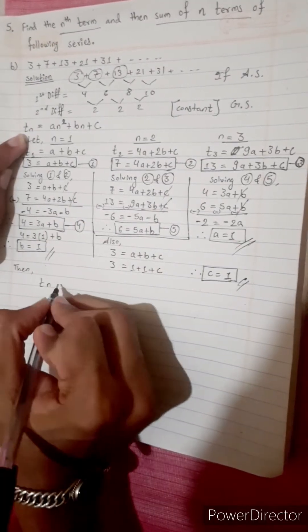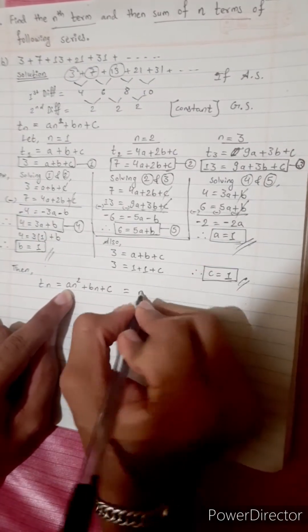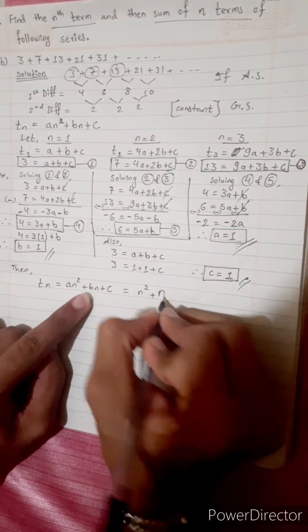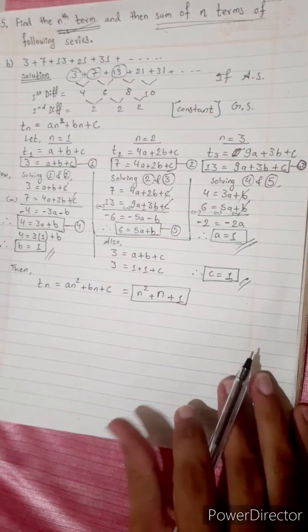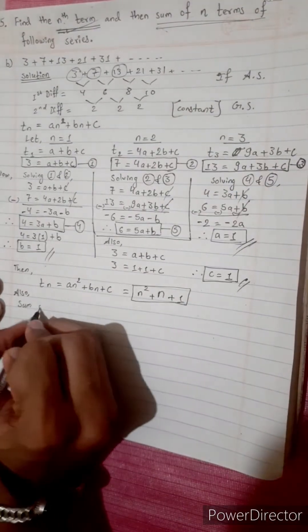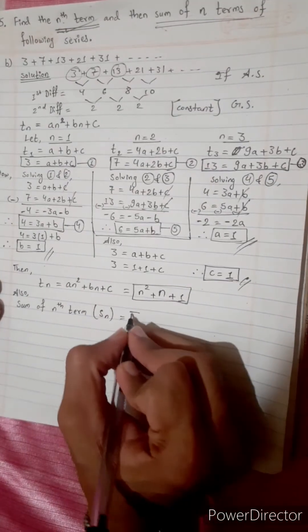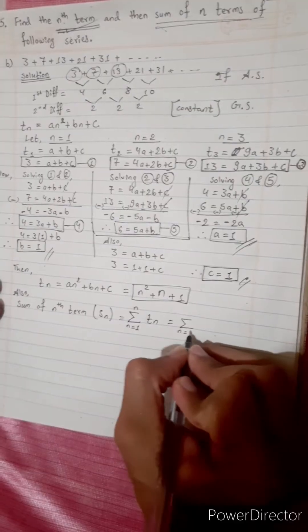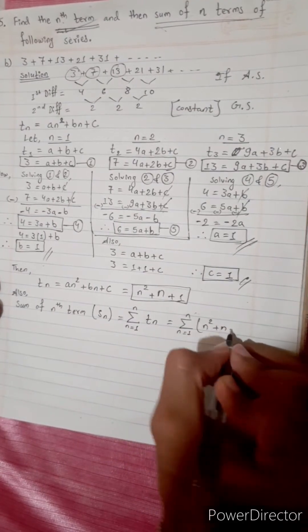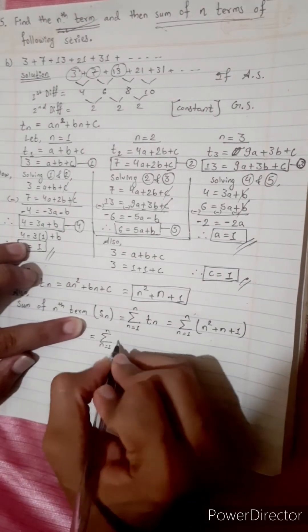We have to find tn: tn equals an squared plus bn plus c equals 1 times n squared plus 1 times n plus 1. So the nth term is n squared plus n plus 1. Now for the sum of the nth term: Sn equals summation of tn from n equals 1 to n, which is summation of n squared plus n plus 1.